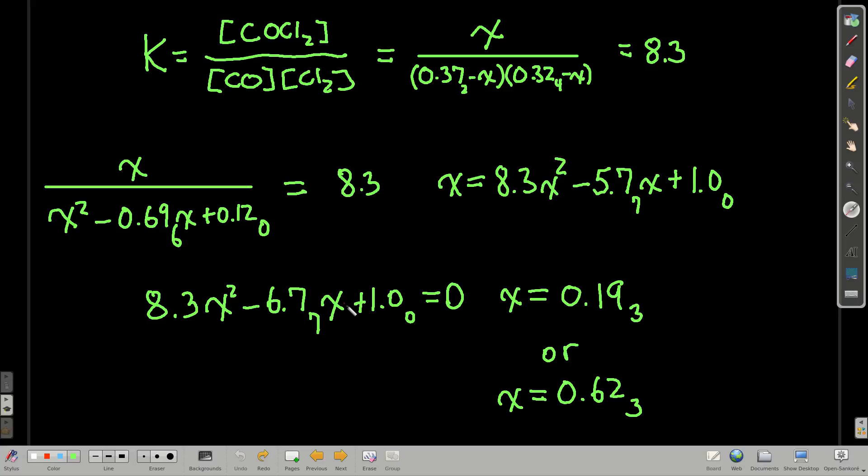And so all you do is you solve the quadratic for X, and you get two roots, 0.19 or 0.62. Well, we can eliminate 0.62 using our chemical knowledge, that's nonsense, because we know that initially we had only 0.37 moles per liter of carbon monoxide and 0.32 moles per liter of chlorine, and we couldn't lose more than we had to begin with of either one. So we pick one of the two roots, that's our answer. Well, that's what X is.